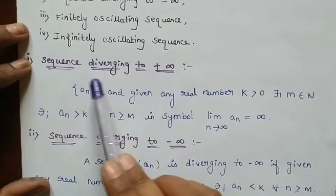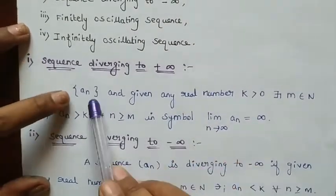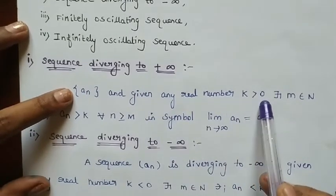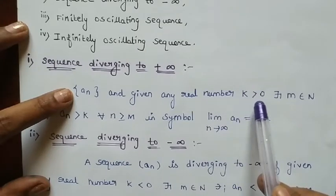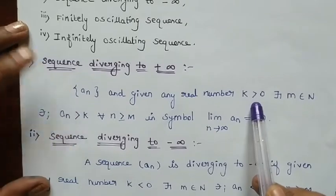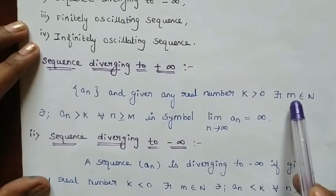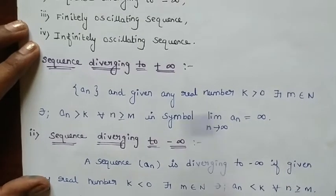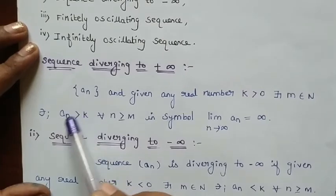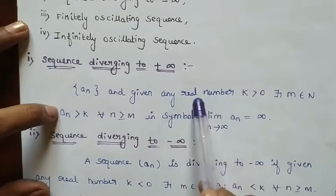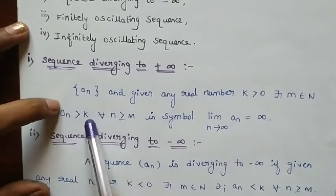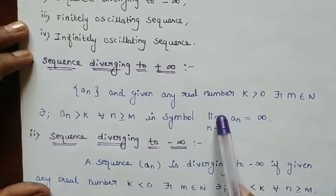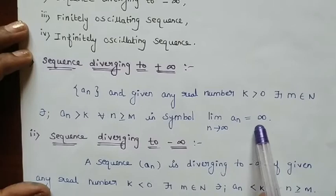First we see the first one: sequence diverging to plus infinity. In that case, considering the sequence AN and given any real number K greater than 0, we take some M belonging to the natural numbers N, such that AN is greater than K for all N greater than or equal to M. It can be written in symbol as: limit N tends to infinity, AN equals infinity.